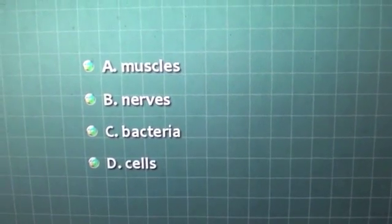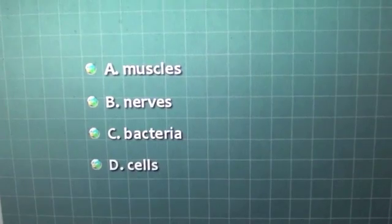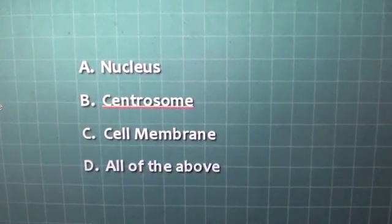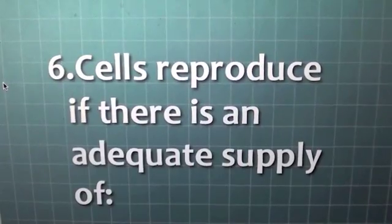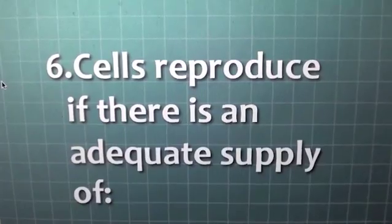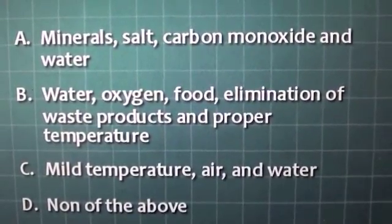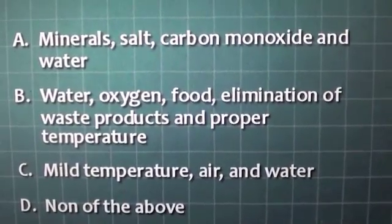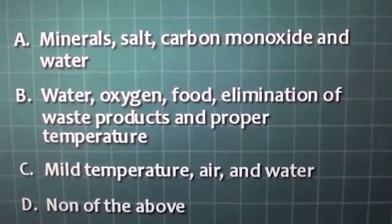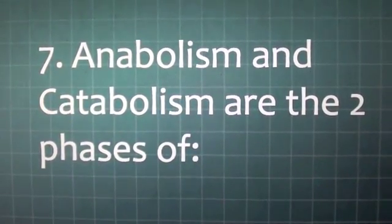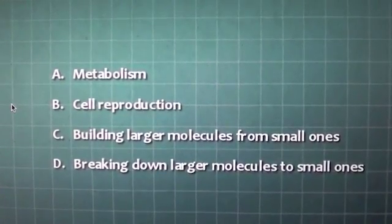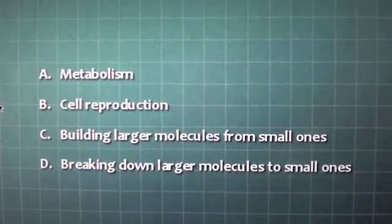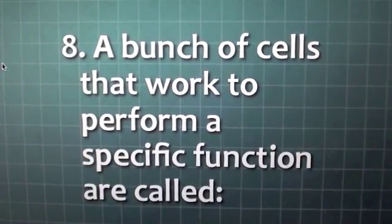The basic units of plants, animals, and humans are: A. Muscles, B. Nerves, C. Bacteria, D. Cells. Cells are made of protoplasm, cytoplasm, and: A. Nucleus, B. Centrosome, C. Cell membrane, D. All of the above. Cells reproduce if there is an adequate supply of: A. Minerals, salt, carbon monoxide, and water, B. Water, oxygen, food, elimination of waste products and proper temperature, C. Mild temperature, air, and water, D. None of the above. Anabolism and catabolism are the two phases of: A. Metabolism, B. Cell reproduction, C. Building larger molecules from small ones, D. Breaking down larger molecules to small ones.